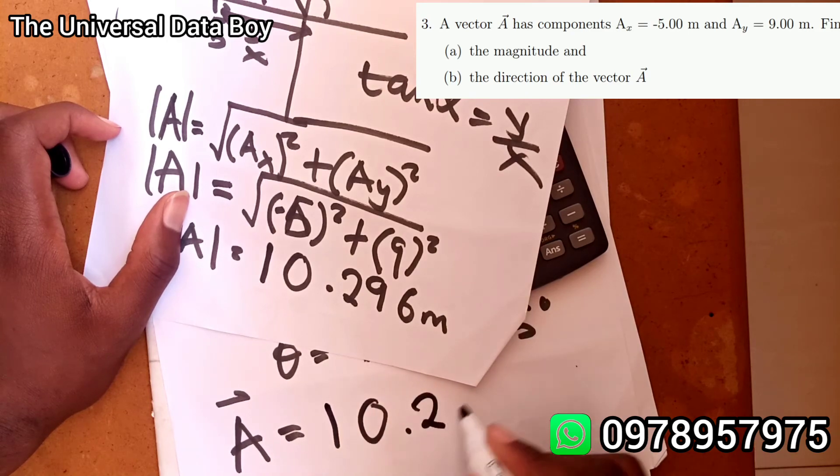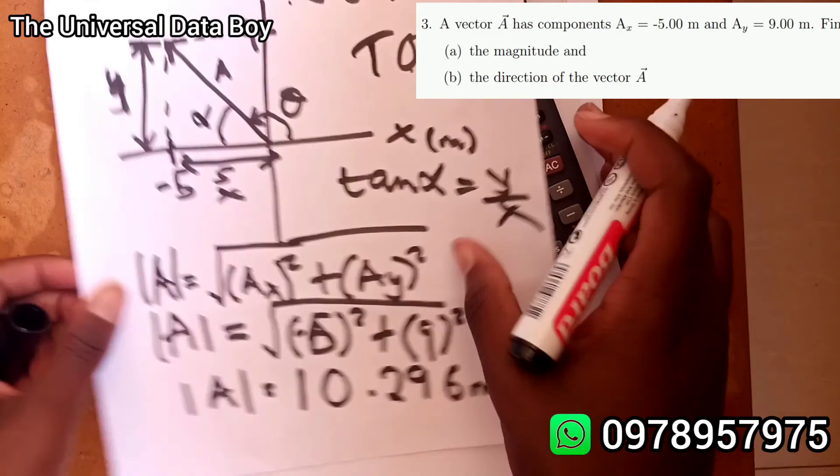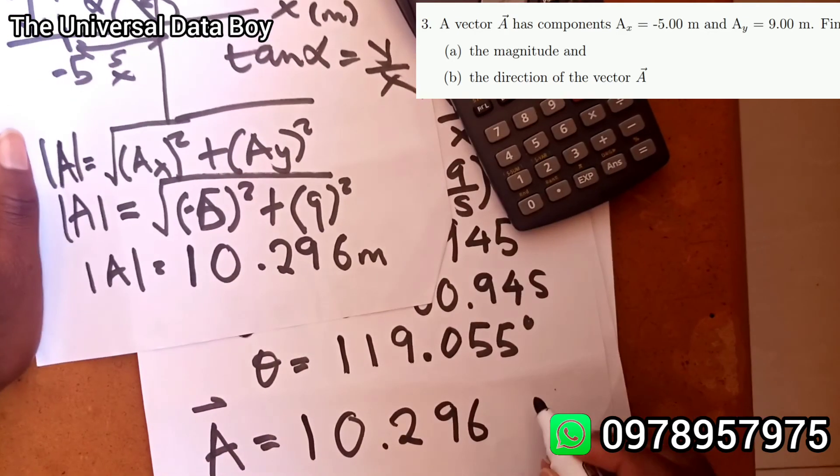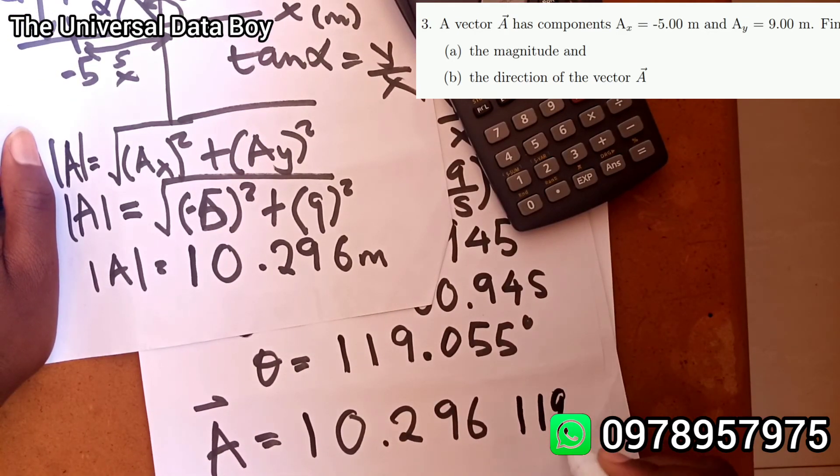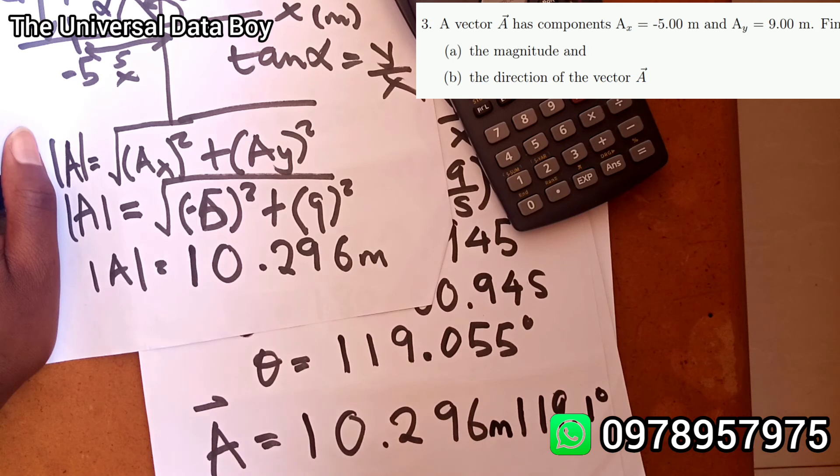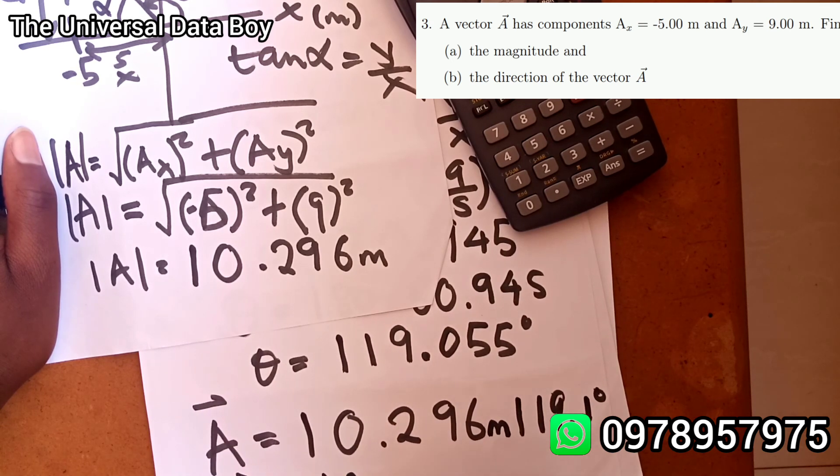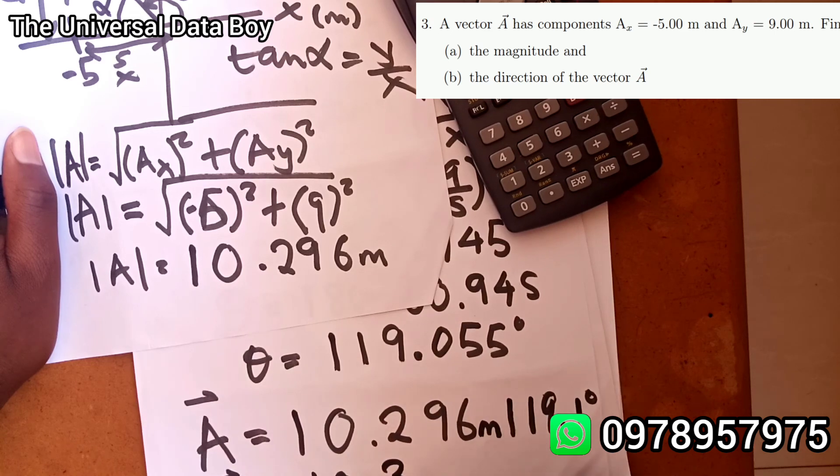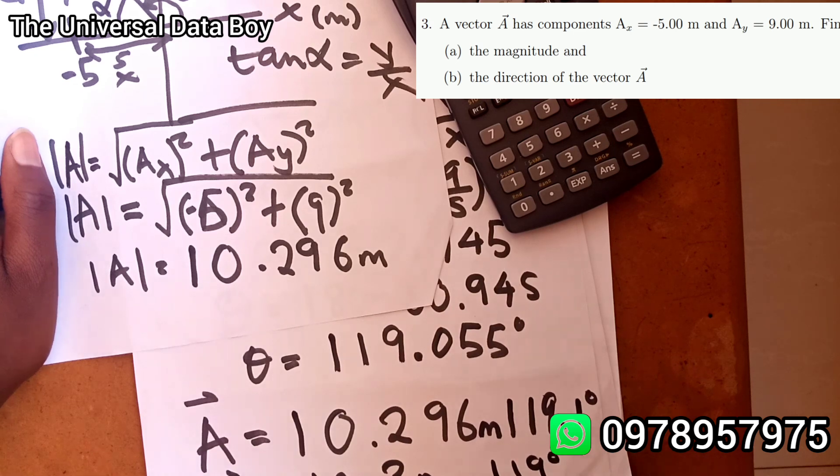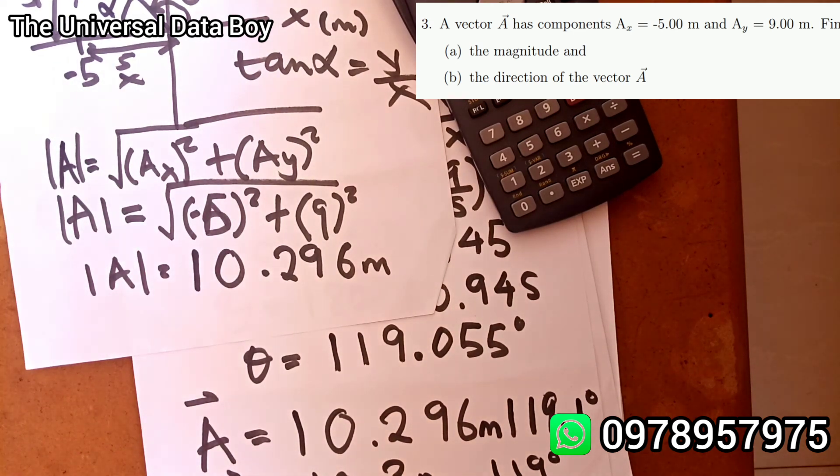And then our direction will be 119.1. This is in meters. This can also be rounded off. If let's say you've been told three significant figures you're going to have it like that. And if this one is in two significant figures it's configured to just be 119 degrees. So that's all for the question.